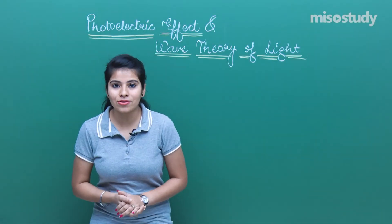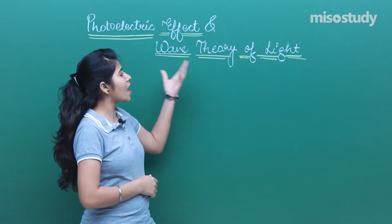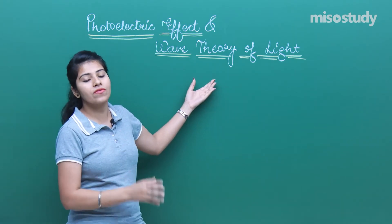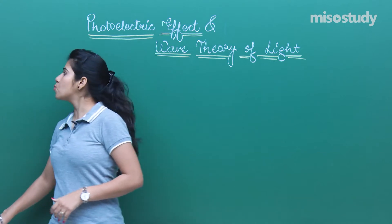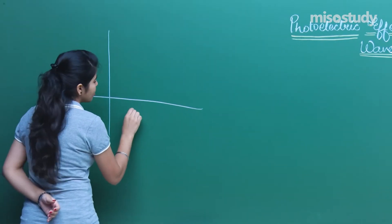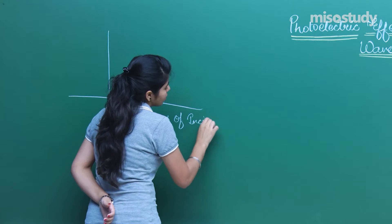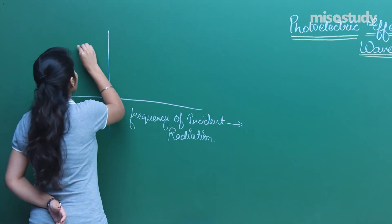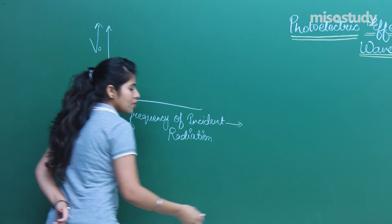Hello dear students, once again welcome back to the class. This is a very fresh morning and we are here to start a new topic: the photoelectric effect and the wave theory of light. You have learned about the photoelectric effect, and now in this lecture we will be learning about the wave theory of light. Let me first recall what we covered in the last class — I left the class with a graph that I had drawn. The graph was plotted between the stopping potential, which we denote as V naught, and the frequency of incident radiation.